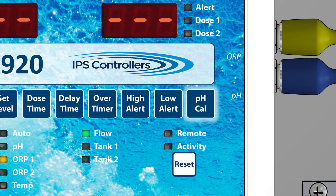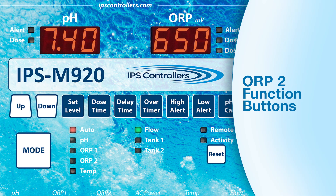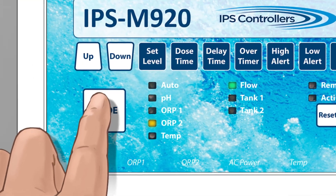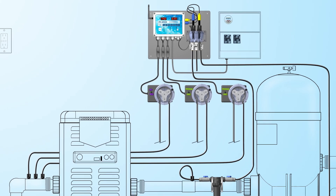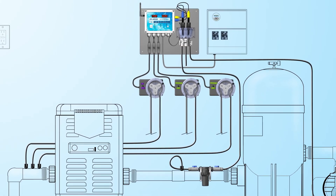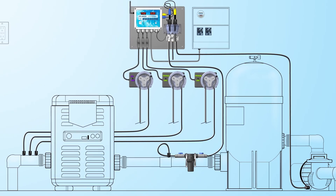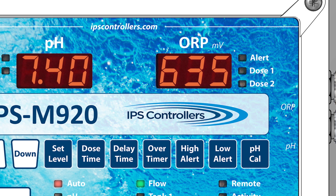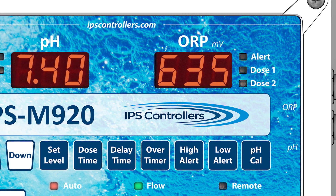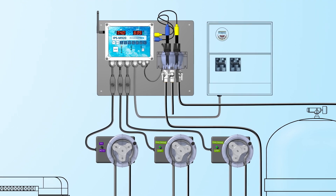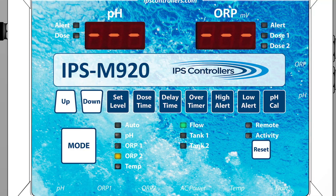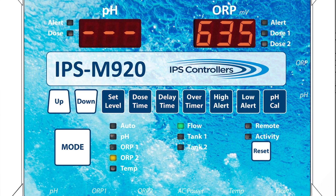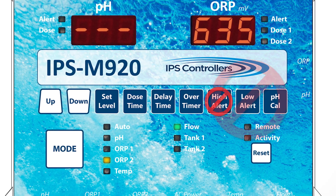The pH Cal button is disabled in the ORP mode. The ORP2 mode allows a second ORP pump to be added to the system. The additional pump supplements the sanitizer feed if ORP1 cannot maintain the correct ORP level. This can occur with an extremely high bather load, especially in the case of a salt system, which needs extra time to recover to the correct ORP level. The ORP2 pump runs in conjunction with the ORP1 pump. The ORP2 set level cannot exceed 10 millivolts less than the set level of ORP1. The ORP2 functions operate the same way as ORP1; however, the high and low alerts are determined by the ORP1 settings.